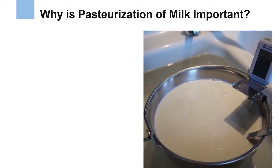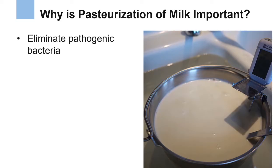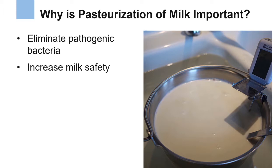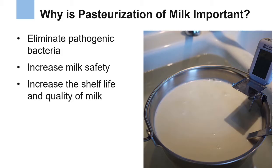Why is pasteurization of milk important? Pasteurization is a crucial step in milk production for several reasons. First, it helps to eliminate pathogenic bacteria, making milk safe for human consumption. Pathogens such as E. coli, salmonella, and listeria are killed to prevent foodborne illnesses in consumers. Because of this, pasteurization increases the safety of milk for consumption. Pasteurization also increases the shelf life and quality of milk by destroying spoilage microorganisms and enzymes that contribute to the reduction of milk quality over time.